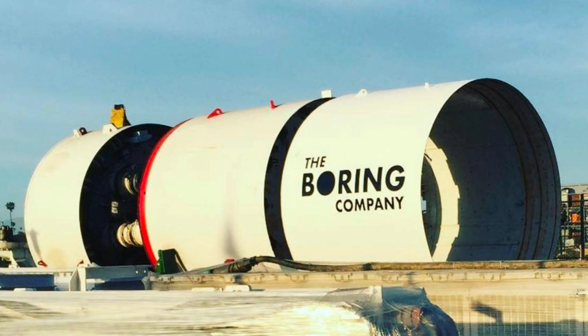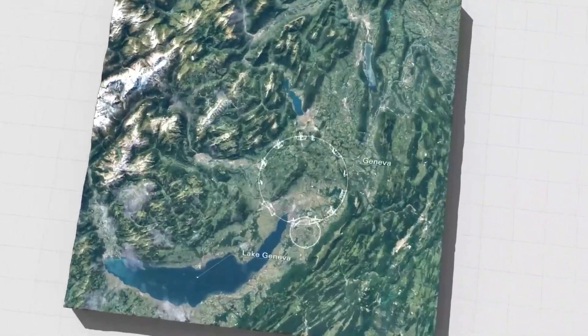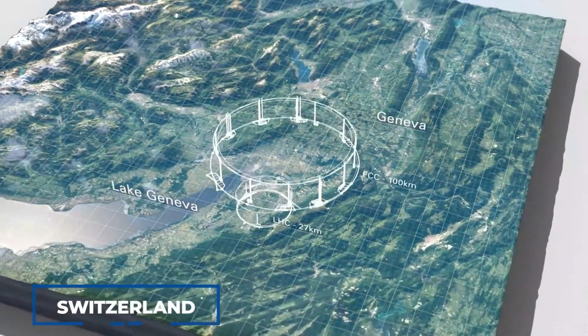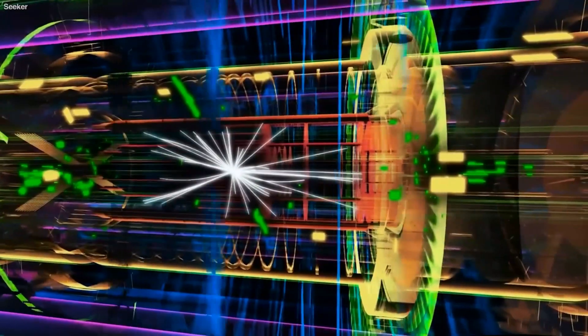Elon Musk's Boring Firm is an infrastructure company primarily based on constructing new tunnels to decrease traffic congestion. The Large Hadron Collider is located in Switzerland and stretches for 27 kilometers, just under 17 miles. The FCC is four times as large as the LHC.